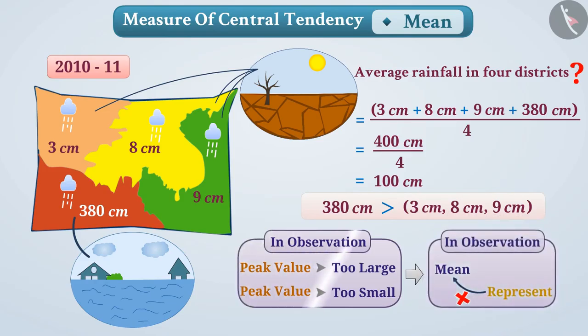In situations when the peak value is too large or small, median and mode help us, which we will read about in subsequent videos.